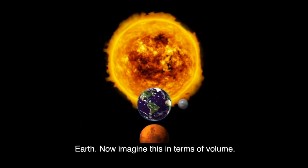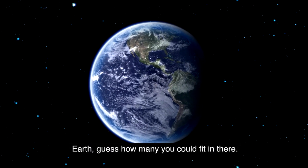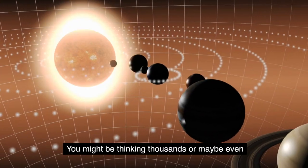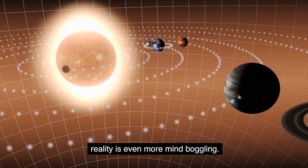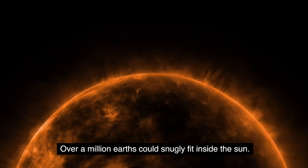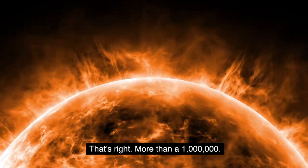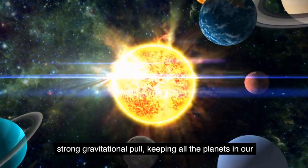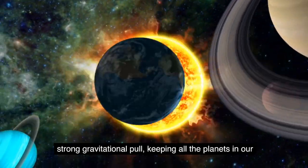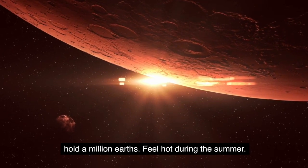Now, imagine this in terms of volume. If you could hollow out the sun and start packing it with Earths, guess how many you could fit in there? You might be thinking thousands, or maybe even hundreds of thousands. But the reality is even more mind-boggling. Over a million Earths could snugly fit inside the sun. That's right, more than a million. This massive size is what allows the sun to have such a strong gravitational pull, keeping all the planets in our solar system in their orbits. So the next time you feel big, remember the sun could hold a million Earths.